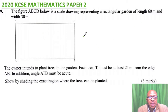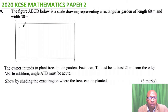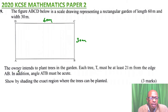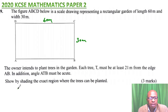Question number nine: the figure ABCD below is a scale drawing representing a rectangular garden of length 60 meters and width 30 meters. We have ABCD where this side is 60 meters and that is 30 meters. The owner intends to plant trees in the garden; each tree T must be at least 21 meters from edge AB. In addition, angle ATB must be acute.